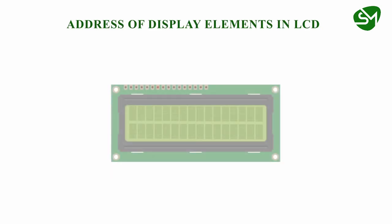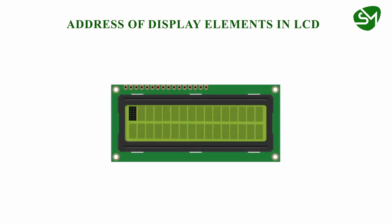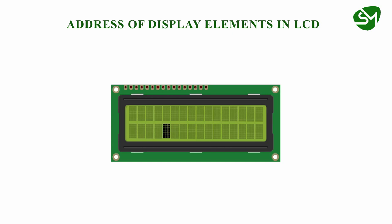The addresses of display elements in the LCD start from 0x80 for the first row, going through 0x81, 0x82, up to 0x8F for the 16 columns. The second row starts from 0xC0, and continues through 0xC1, 0xC2, 0xC3, 0xC4, 0xC5, 0xC6, 0xC7, 0xC8, 0xC9, 0xCA, 0xCB, 0xCC, 0xCD, 0xCE, and 0xCF.